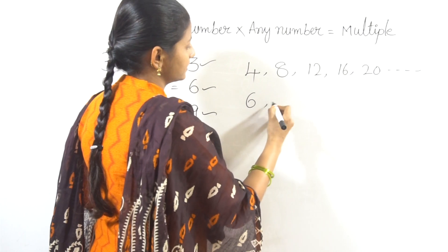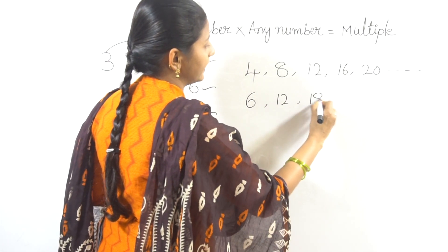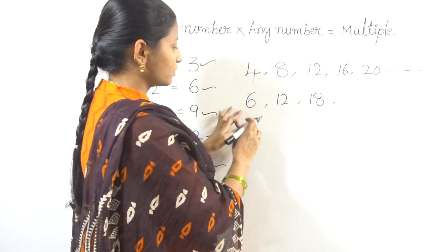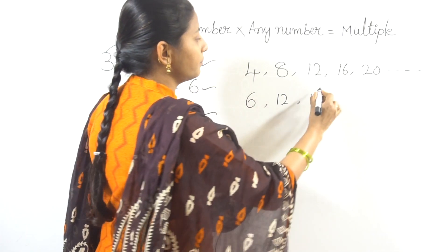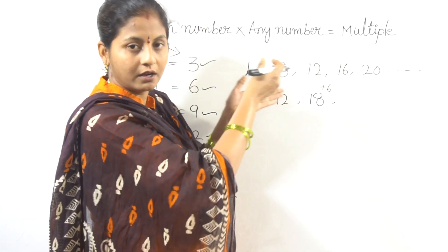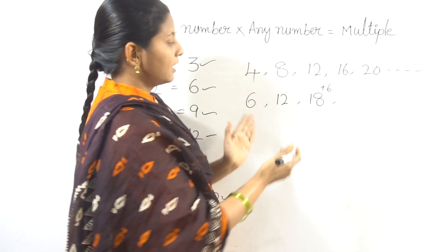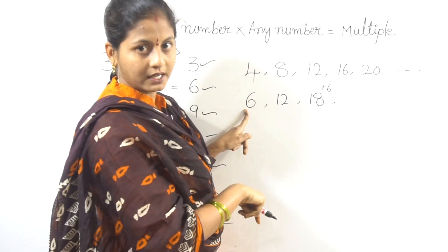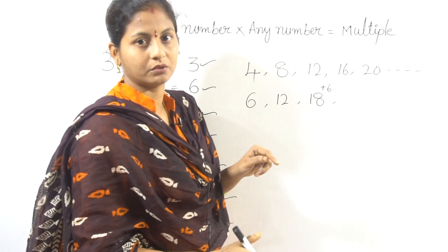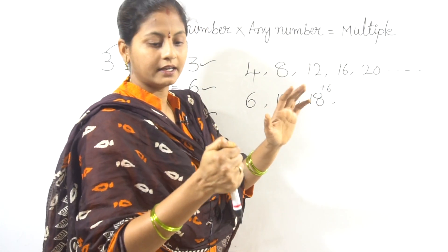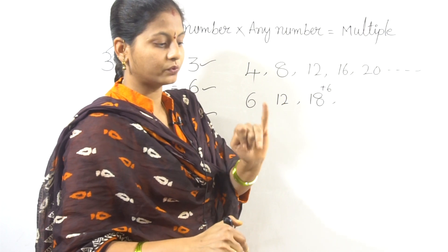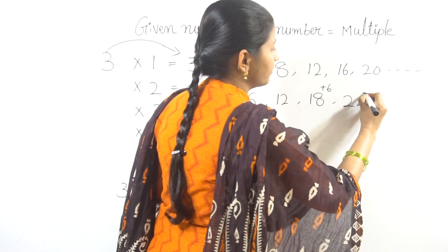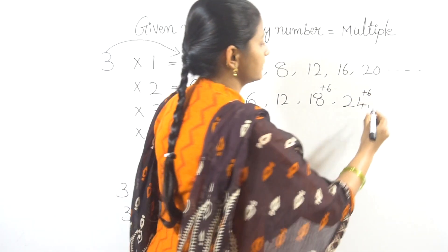Multiple of 6: 6 ones are 6, 6 twos are 12, 6 threes are 18. After 18, the next multiples are 24, then 24 plus 6 is 30. The next multiple of 6 is obtained by adding 6 each time.